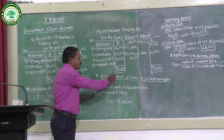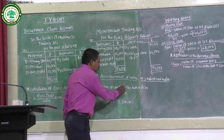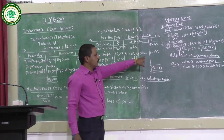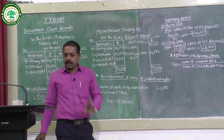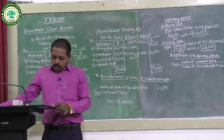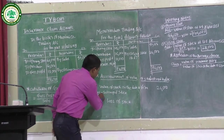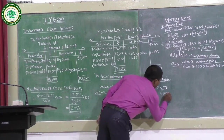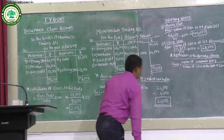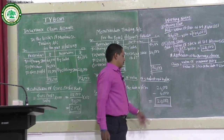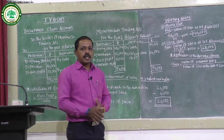Next is the ascertainment of the value of stock destroyed by fire. Value of stock on the date of fire = Rs.24,000. Less salvage stock at cost = Rs.4,000. Therefore, loss of stock = Rs.24,000 minus Rs.4,000 = Rs.20,000.